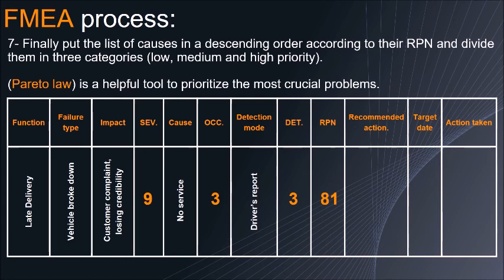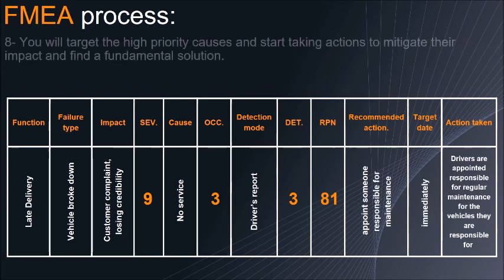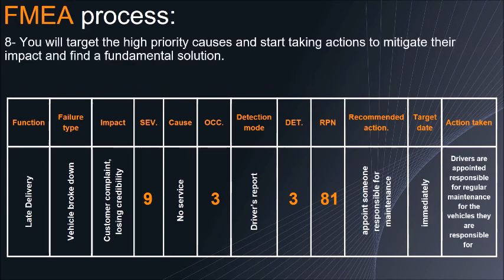Finally, define the list of causes and put them in descending order according to their RPN, dividing them into three categories: low, medium, and high priority. You will target the high priority causes and start taking actions to mitigate their impact and find a fundamental solution.